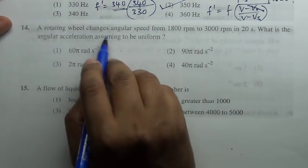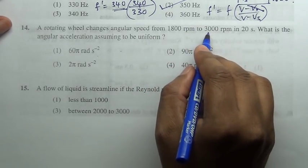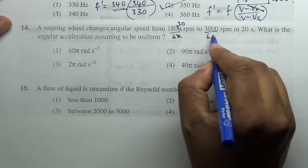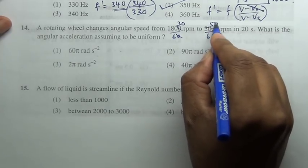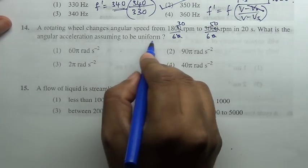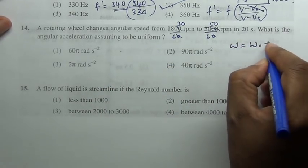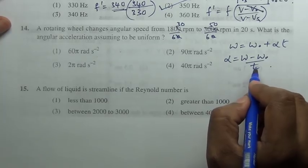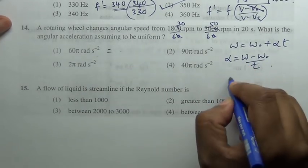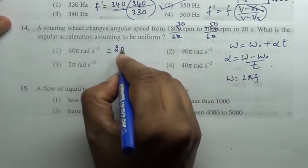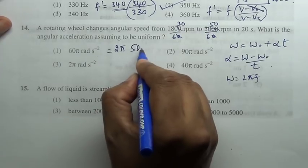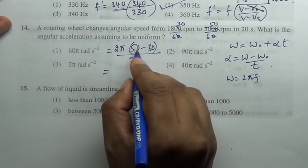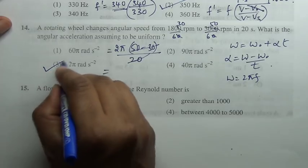A rotating wheel changes angular speed from 1800 rpm to 3000 rpm. Divide this by 60, this is 50 rpm, in 20 seconds. What is the angular acceleration assuming it to be uniform? Omega equal to omega naught plus alpha t. Angular acceleration is omega minus omega naught by t. But omega is 2 pi f. Therefore 2 pi common factor, omega is 50 minus omega naught is 30, by time taken is 20 seconds. So it is 20 by 20. Answer is 2 pi radian per second square.